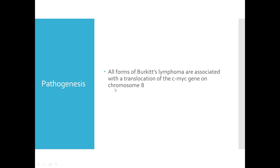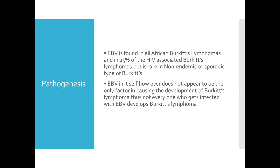Regarding pathogenesis, all forms of Burkitt's lymphoma are associated with translocation of the CMYC gene on chromosome 8. EBV is found in all African Burkitt's lymphoma cases and in about 25 percent of HIV-associated Burkitt's lymphoma cases, but it is rare in the sporadic type. So in African Burkitt's lymphoma, EBV is found in all patients; in HIV-associated, it is found in 25 percent; and in non-endemic Burkitt's lymphoma, it is rarely seen.